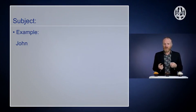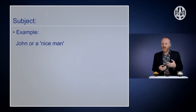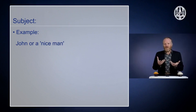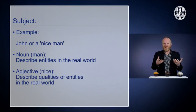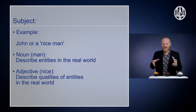Very often we will find sentences which are longer than three words, because the parts S, V, and O themselves can have more structure. For instance, a subject is not necessarily just 'John' — it can also be 'a nice man', which is already three words. Let's pick out two of those: nice and man. Nice we call an adjective, and man we call a noun. Nouns describe entities or objects in the real world, and adjectives describe qualities of those entities. So 'man' is something you can touch that can move around, and 'nice' is some quality which some men seem to have.